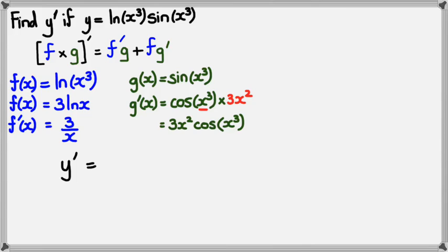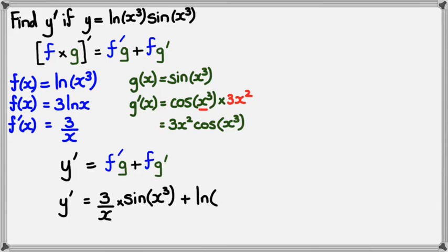Now we need to put it all together. So we have y'. Well, I'm just going to write down the formula. There it is. And replacing all the f' and the g's and everything else. So y' would equal f', which is 3 over x, multiplied by g, which is sin(x³), plus f, which happens to be ln(x³). And that's multiplied by g'(x), which is 3x² multiplied by cos(x³).